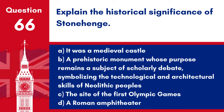Question 66: Explain the historical significance of Stonehenge. a. It was a medieval castle. b. A prehistoric monument, whose purpose remains a subject of scholarly debate, symbolizing the technological and architectural skills of Neolithic peoples. c. The site of the first Olympic Games. d. A Roman amphitheatre. Answer: b. Stonehenge is one of the most famous prehistoric monuments in the world, showcasing the engineering skills of its builders.